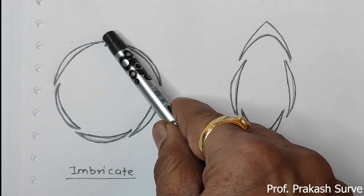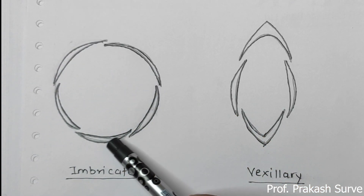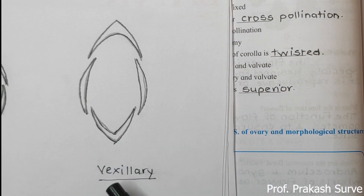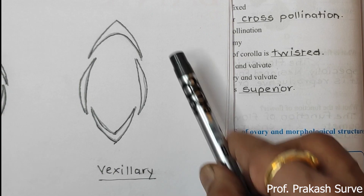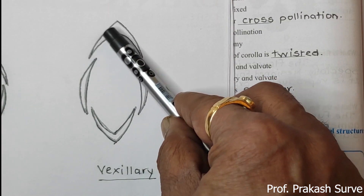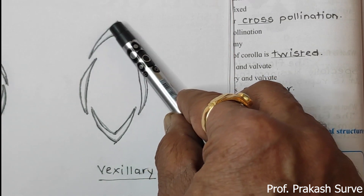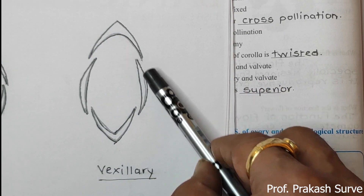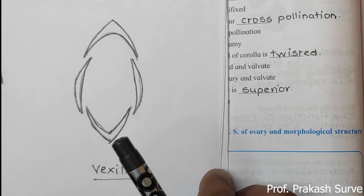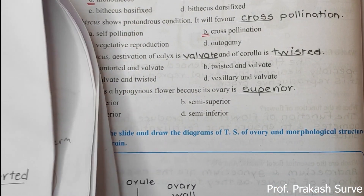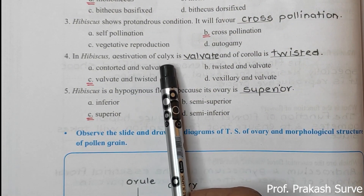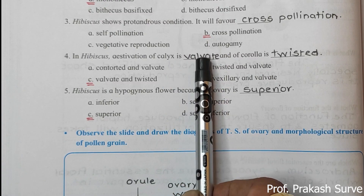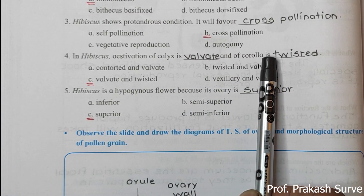There is also imbricate estivation, where one petal is totally outside and others twist on one another. Vexillary estivation is seen in flowers like Gokarni, where one boat-shaped structure is outside, one is inside, and two others have one end inside and one end outside. In hibiscus, calyx is valvate and corolla (petals) is twisted.